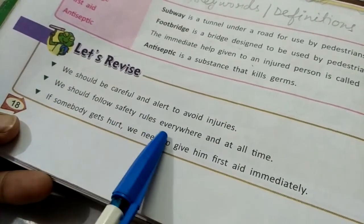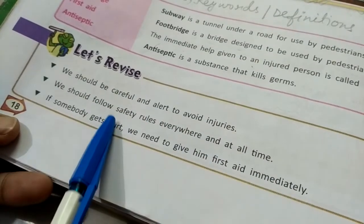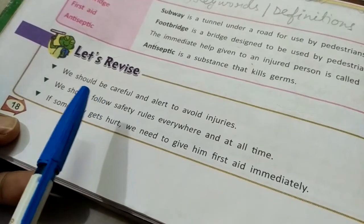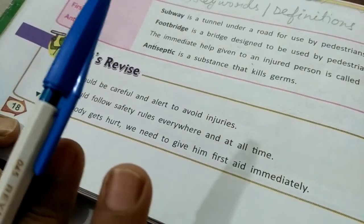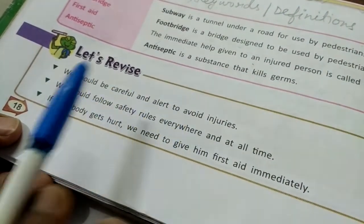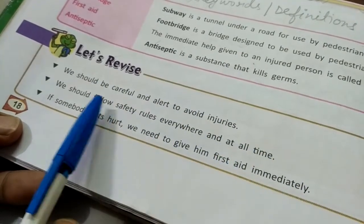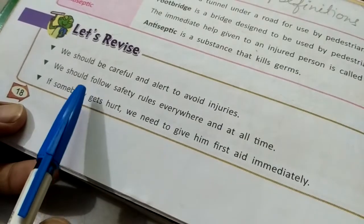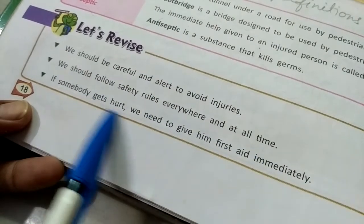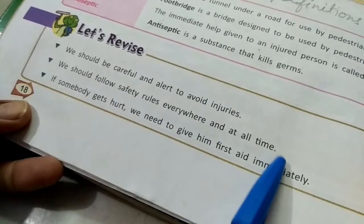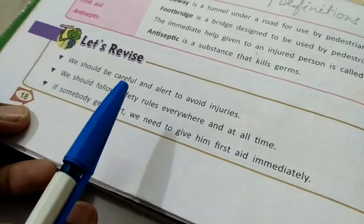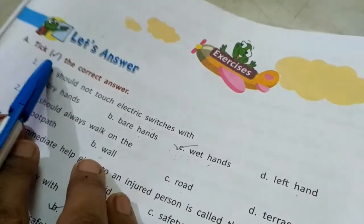We have to be very careful and alert to avoid injuries. We should follow safety rules everywhere and at all times so that we can keep ourselves safe, away from injuries, and avoid accidents. If somebody gets hurt, we need to give them first aid immediately — at once we should give treatment and help to that injured person. Now let's check out the book exercises.